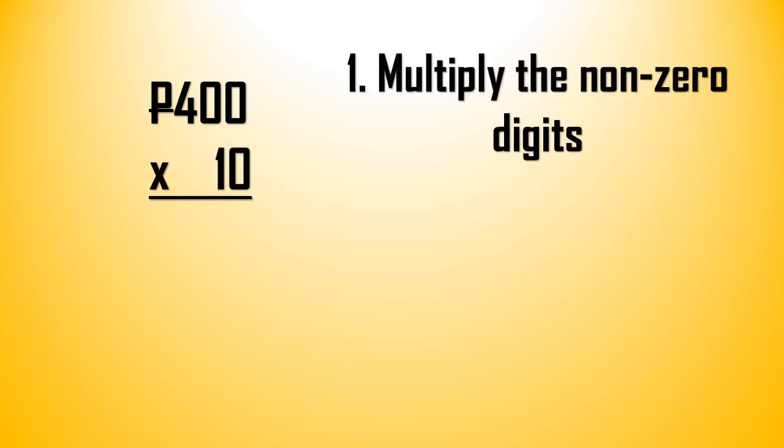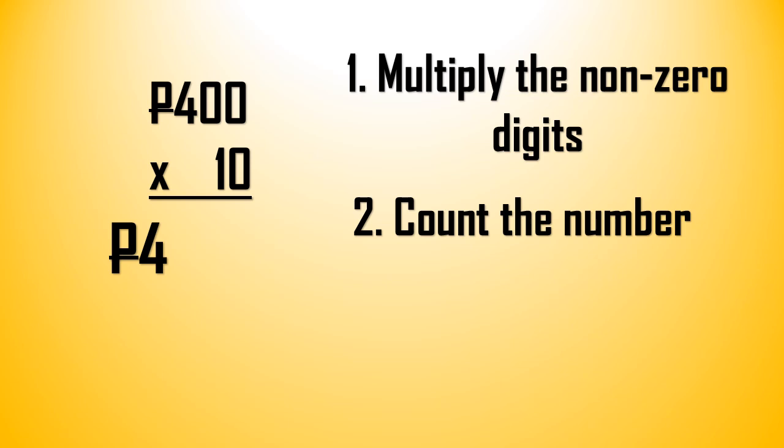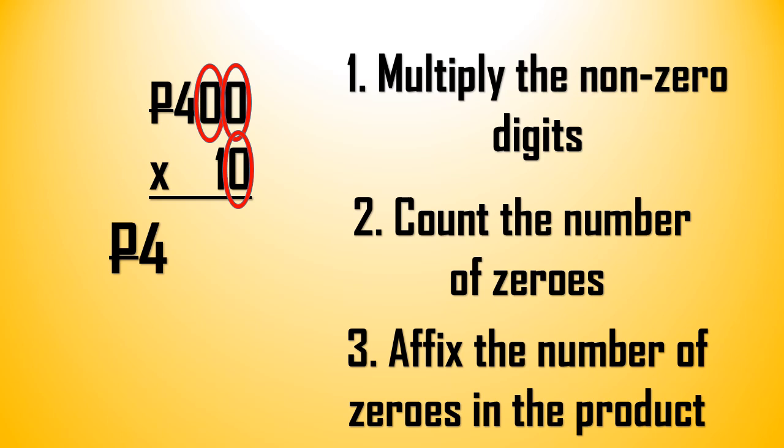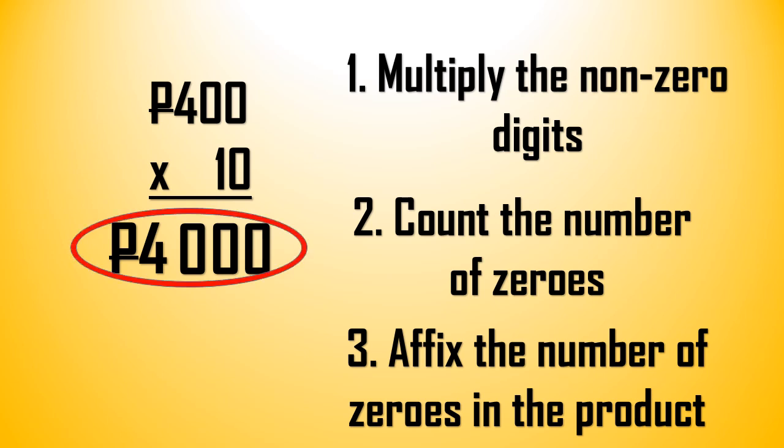Now 400 pesos times 10. First we multiply the non-zero digits. We have 4 and 1. 4 times 1 is 4. And then we count the number of zeros in the factors. We have 1, 2, 3. There are 3 zeros in the factors. Now what we do is we affix the number of zeros in the product. 1, 2, 3. So our answer is 4,000 pesos.